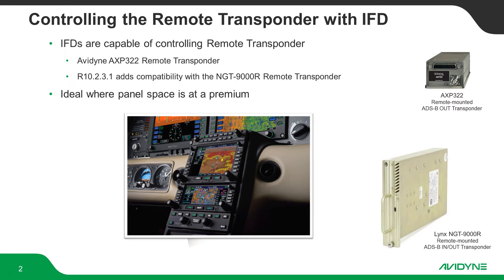The remote transponder is great for when you have a tight panel space and you want to put in a large IFD or a couple. As you see here in the Cirrus, we've removed two 430s and put in an IFD 440 and a 540 in the same space and then remote mounted the transponder.